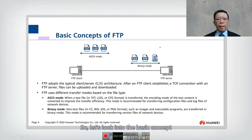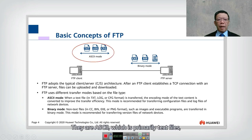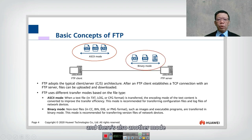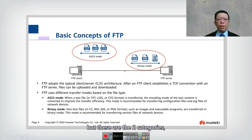There are two file modes that FTP can transfer. The first is ASCII mode, which is primarily for text files, log files, or config files. The second is binary mode, which covers executable files, bin files, or PNG files. These are the two categories: ASCII mode and binary mode.